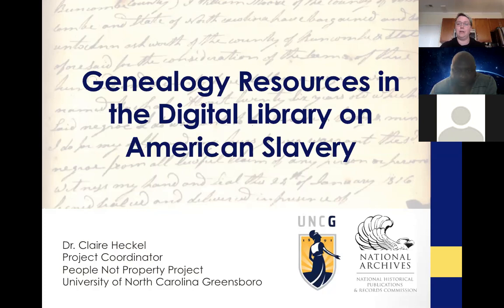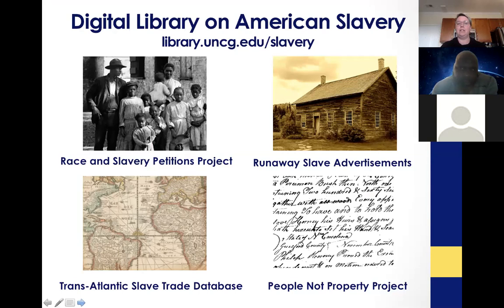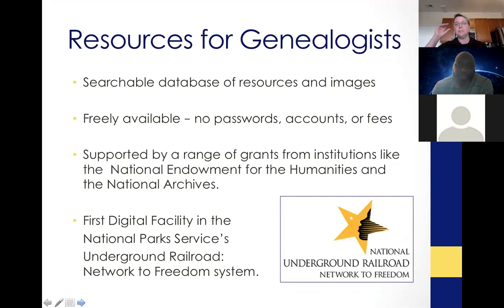The Digital Library on American Slavery is designed as an ever-growing one-stop website for digital resources related to the history of slavery, primarily in North Carolina, but some resources are national as well. It's made up of the Race and Slavery Petitions Project, the Runaway Slave Ads Project, we link to the Transatlantic Slave Trade Database — a project out of Emory — and People Not Property, the latest addition. It's a searchable database of sources and images, freely available with no passwords, accounts, or fees.